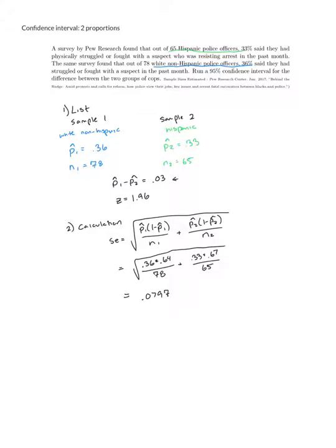I want you to notice that this SE is really big. This is telling us that our estimated standard deviation is almost 8% which is pretty large, especially since our actual difference was only 3%. This large SE is coming from the fact that we have really small sample sizes. If we wanted to get a better estimate, a more precise estimate, we need to increase the sample size.